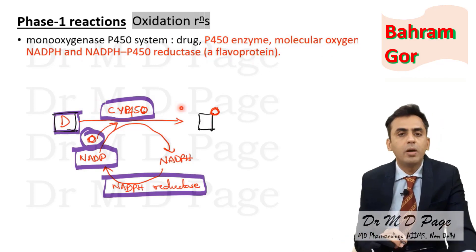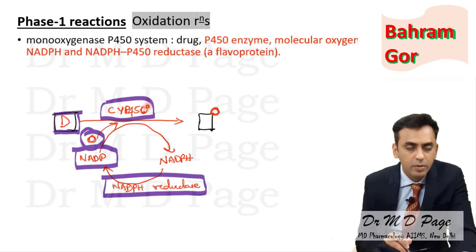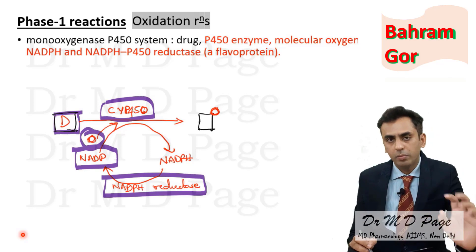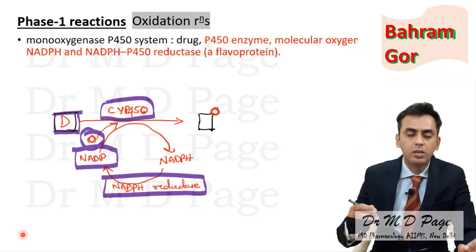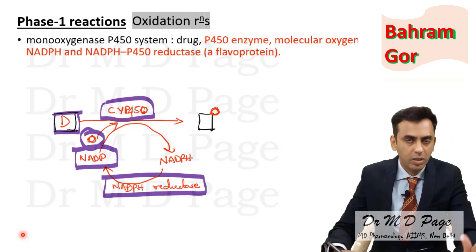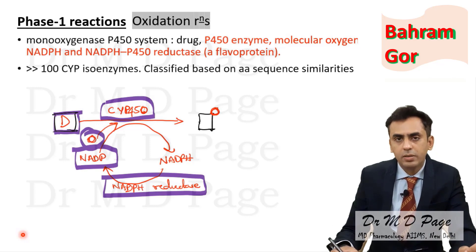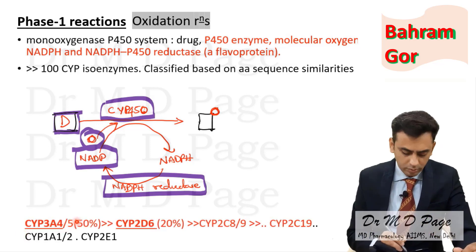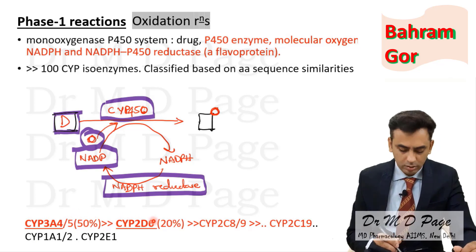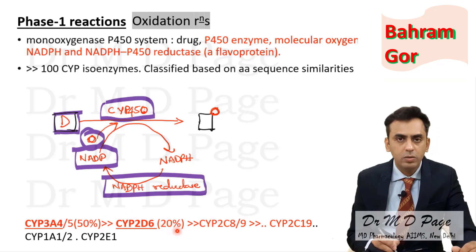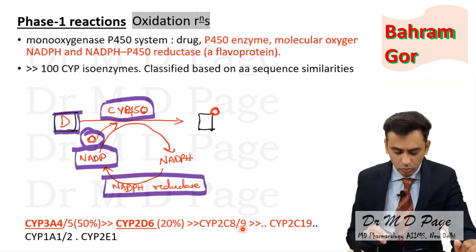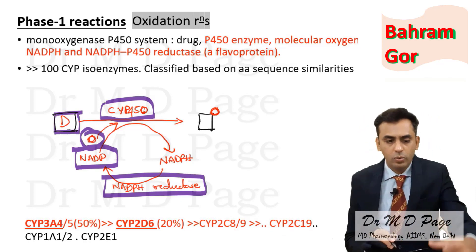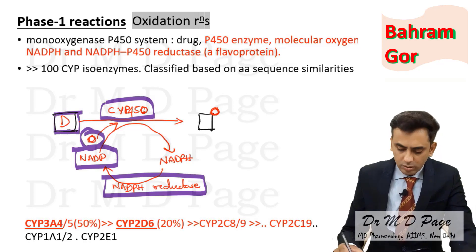There are hundreds of types of CYP450 depending on amino acid sequence, and many are involved in drug metabolism. From a pharmacological point of view, very few are important. CYP3A4 or 3A5 metabolizes 50% of drugs. CYP2D6 metabolizes 20% of drugs. Other important ones are CYP2C8/2C9, CYP2C19, CYP2E1, and CYP1A1 or 1A2.